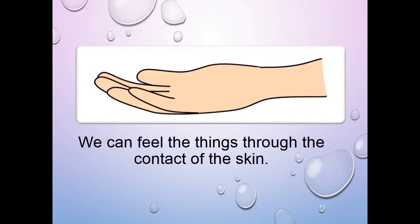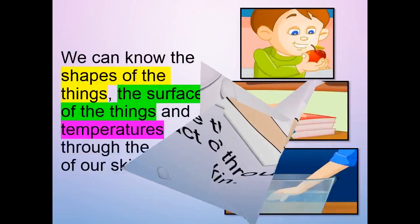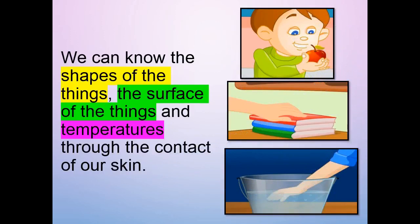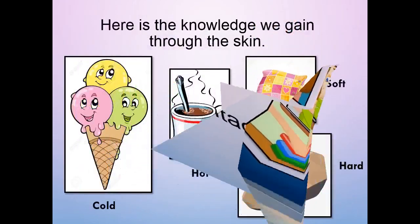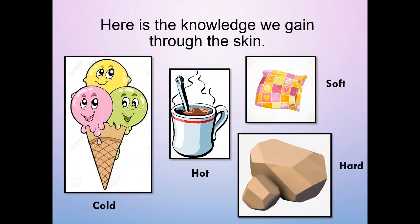Our last sense is the sense of touch. We can feel things through our skin. We can know the shape of things, the surface of things, and the temperature of things through our skin. For example, ice cream is cold, coffee is hot, a pillow is soft, and a rock is hard. We come to know all these things when we touch them.